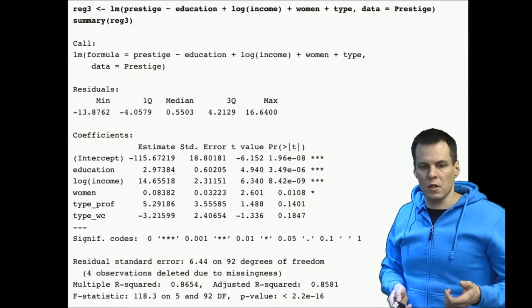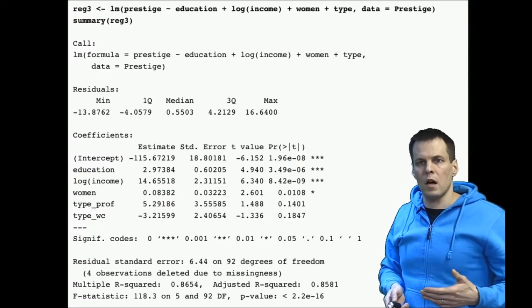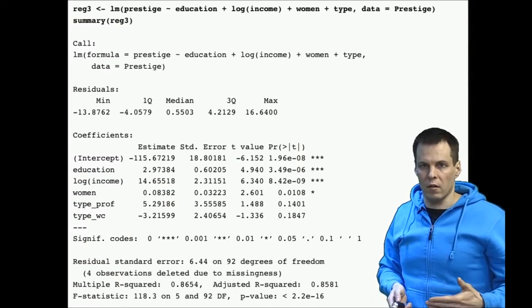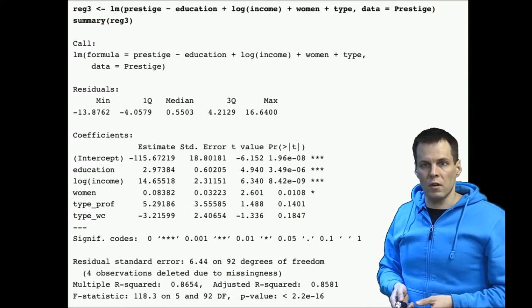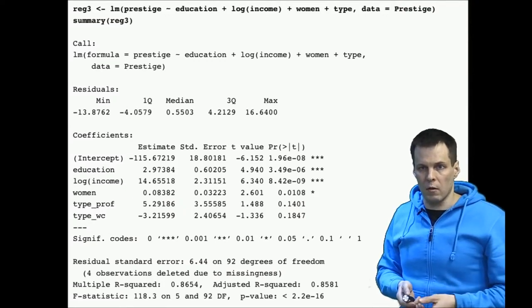The first thing we need to understand is that every time you have a categorical variable and dummy variables in a regression analysis, one of those categories is left out.